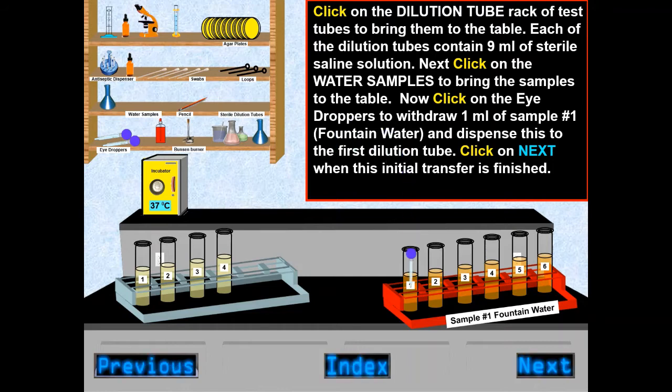Then the water samples, the fountain water of 1 ml, are dispensed into the first dilution tube with droppers.